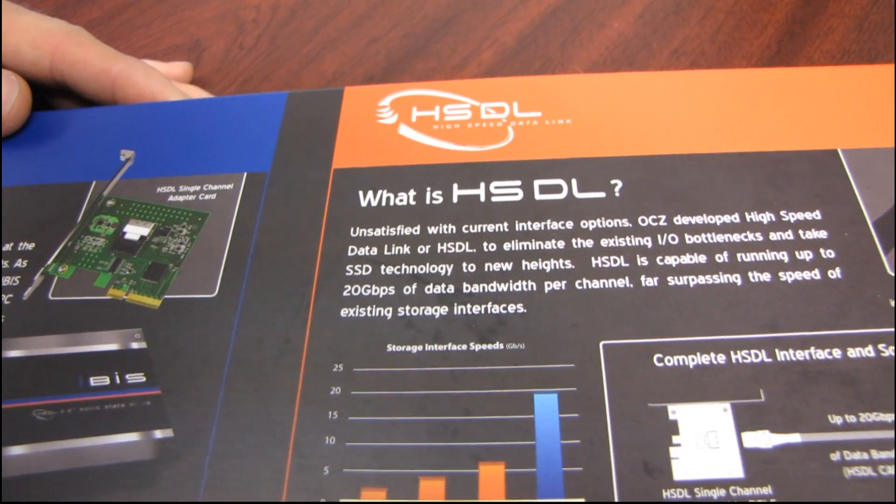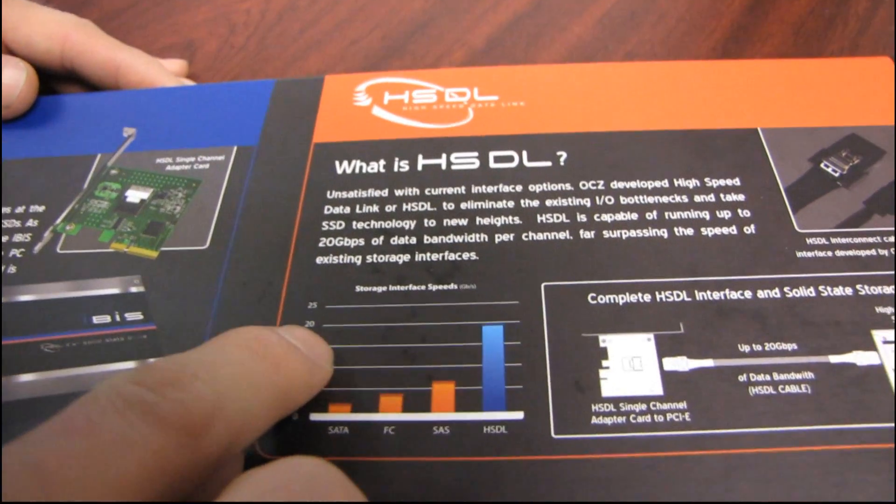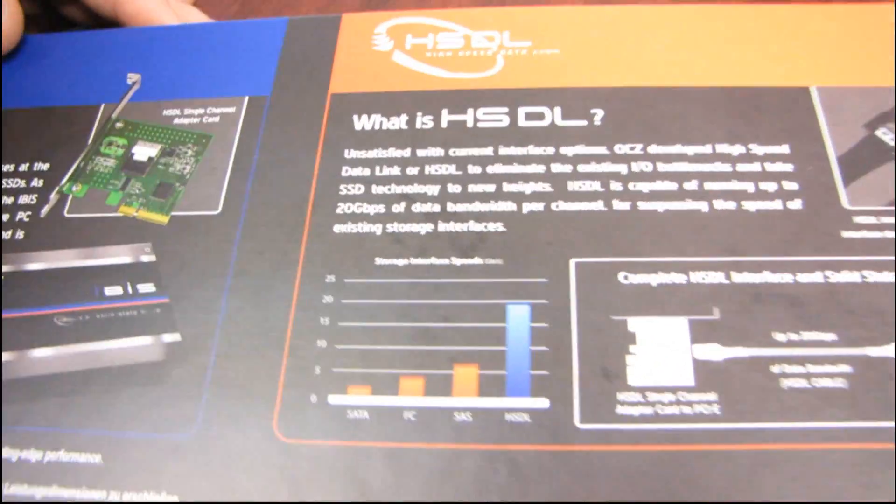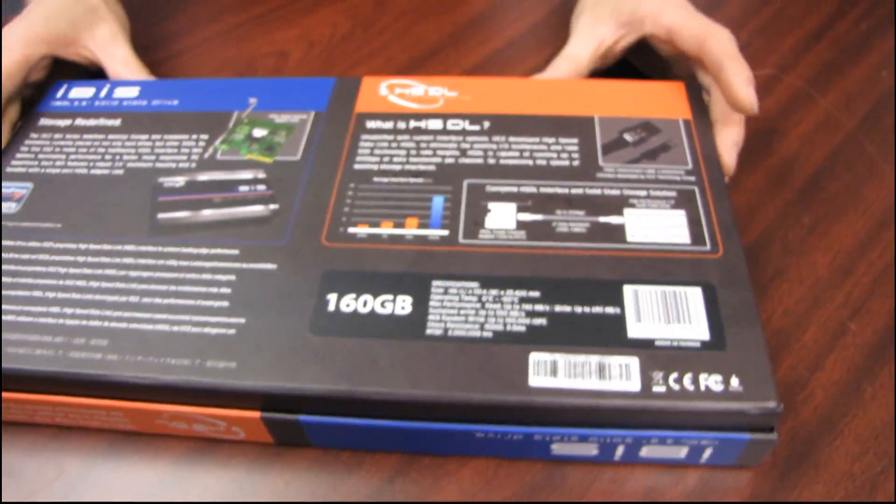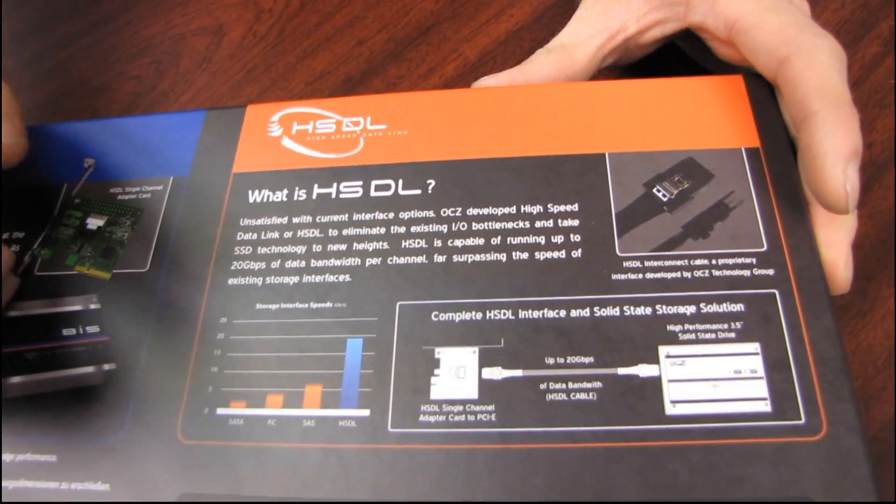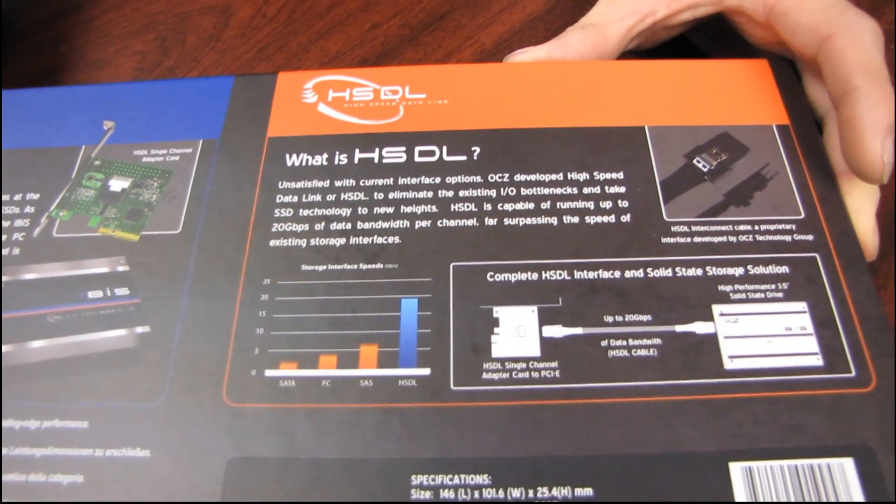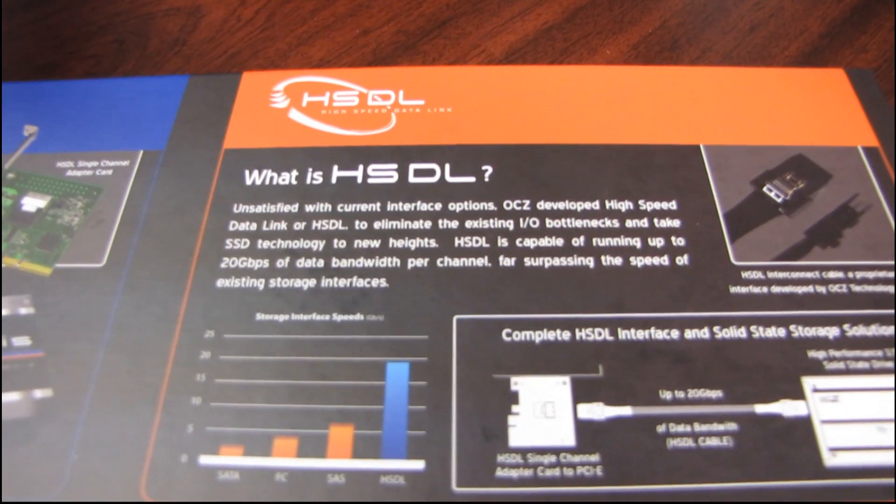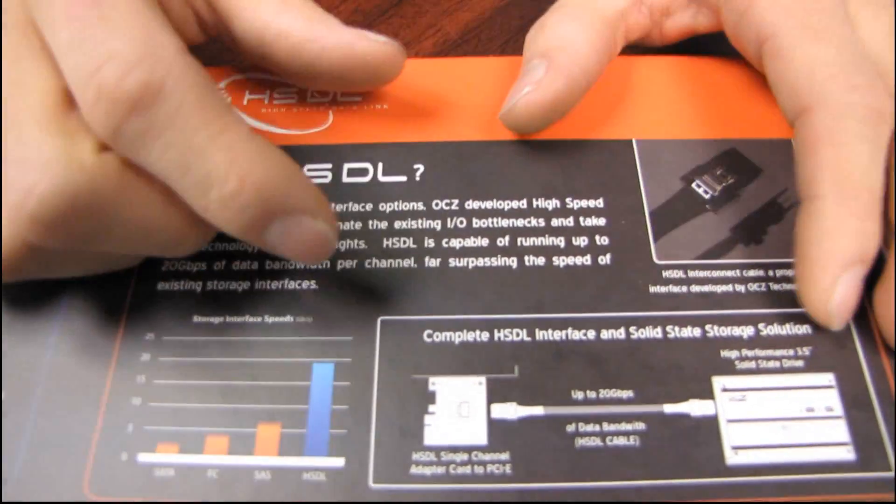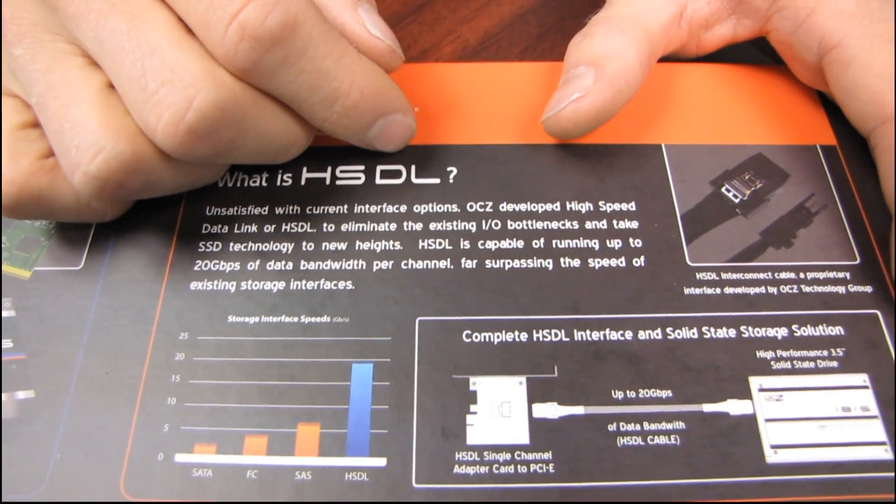HSDL. So that is, I think it stands for High Speed Data Link, or something like that. Anyway, this is capable of almost 20 gigabit per second. So that means that we can take four SanForce controllers. Remember, SanForce controller is almost able to max out a SATA 3 gigabit per second connection. We can take up to four of those at a time, plug them in with the HSDL cable directly into our HSDL card, and we can get just unheard of performance.